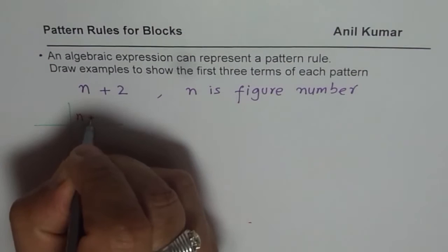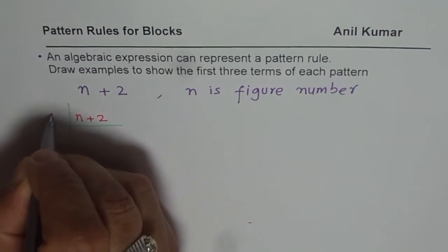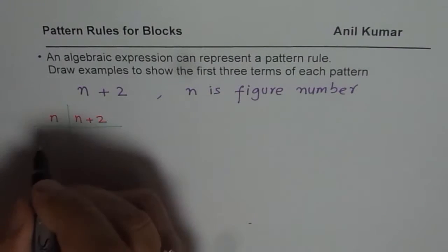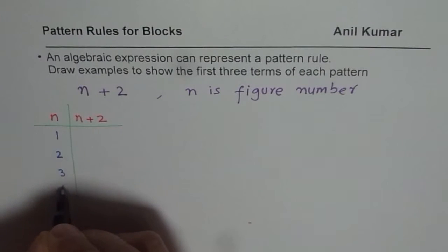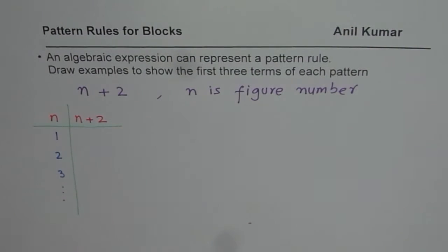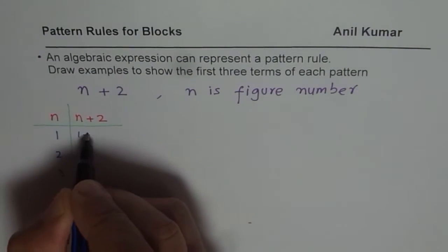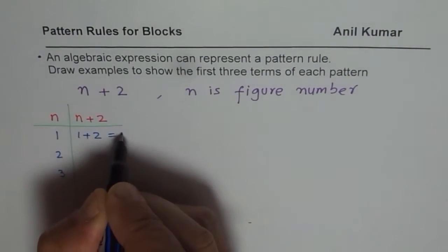So the expression for us is n plus 2. Let me write down here n plus 2 and here we will write different values for n. We will always begin with n equals 1 and then go for 1, 2, 3 and so on. But on this page I am only going to draw first three patterns. If n is 1, then what is 1 plus 2? 1 plus 2 is 3.